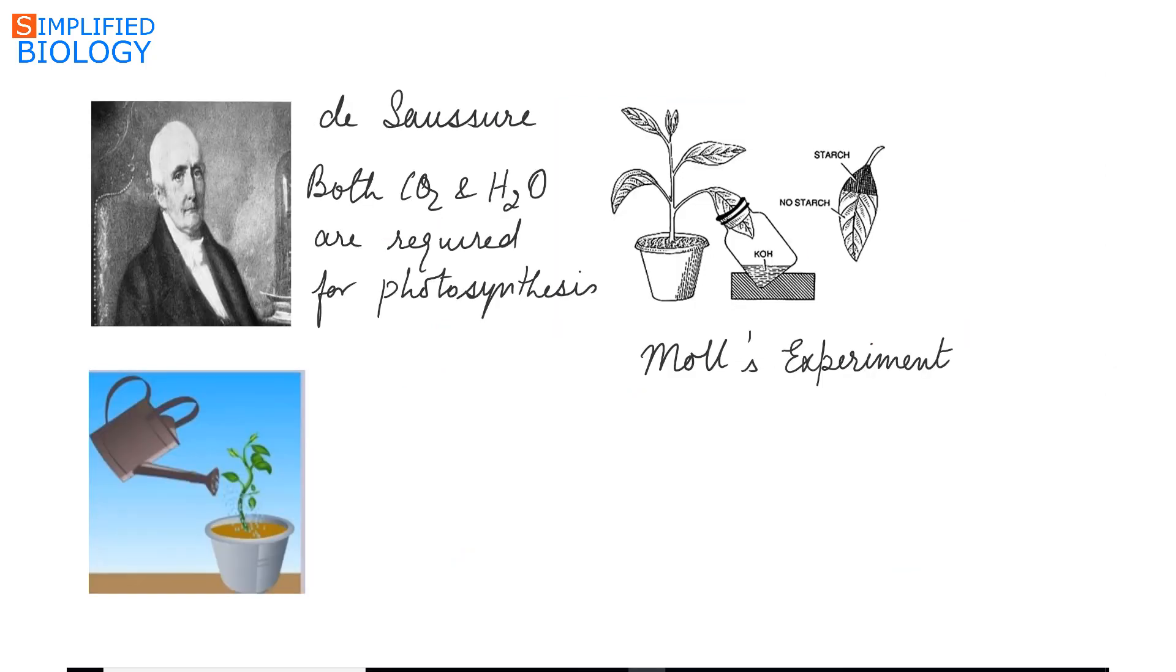De Saussure said that both carbon dioxide and water are required for photosynthesis. He said that increase in the mass of plant is not only due to water but also carbon dioxide.